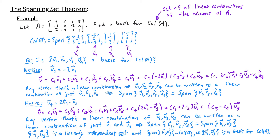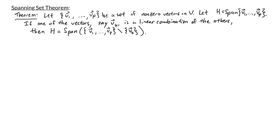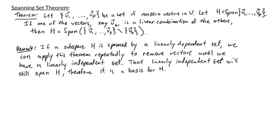So this is the idea of the spanning set theorem. The spanning set theorem states: let V1 through Vp be a set of non-zero vectors in V and let H be the span of those vectors. If one of the vectors, say Vk, is a linear combination of the others, then H is the span of the vectors V1 through Vp with Vk removed. The idea is that if I had any linear combination of V1 through Vp I can substitute Vk and write it in terms of the other vectors, so the span of the initial set equals the span without Vk. If I have a subspace spanned by linearly dependent vectors I can use this theorem to remove dependent vectors one at a time until I have a linearly independent set, forming a basis for the subspace.